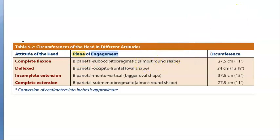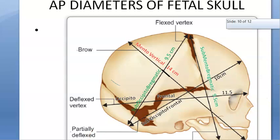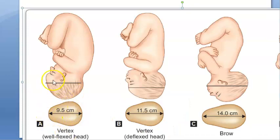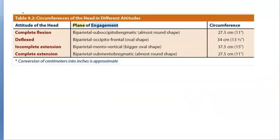The biparietal diameter is 9.5 cm. The suboccipitobregmatic diameter is also 9.5 cm. Since both are 9.5 cm, together they form almost a circle — the plane of engagement is nearly round. This applies to the most common deliveries with a flexed head in cephalic presentation: biparietal plus suboccipitobregmatic, both 9.5 cm, almost a circle.